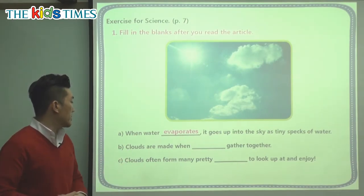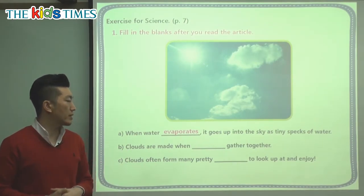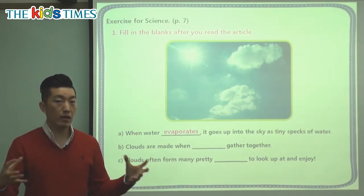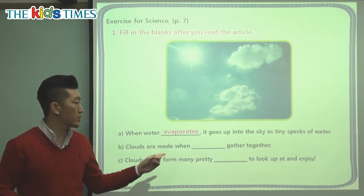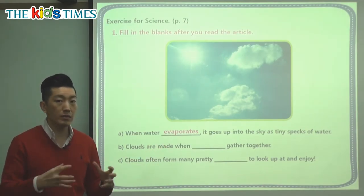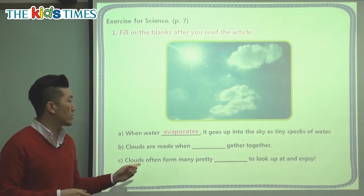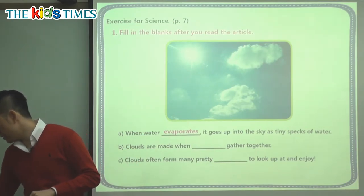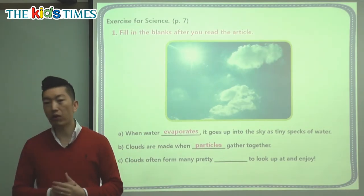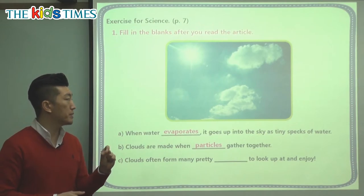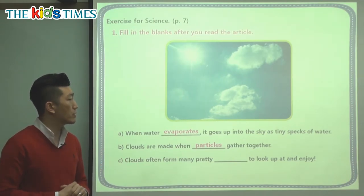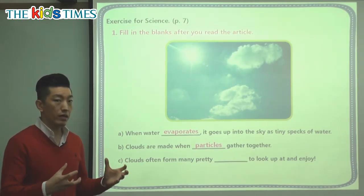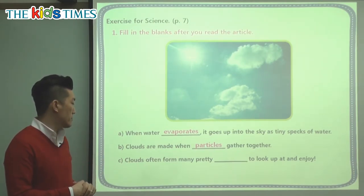Let's look at question B. Clouds are made when something gathers together — so what comes together? Gather means coming together. What comes together to make clouds? They are particles — the very small pieces, very tiny pieces of water. When they come together, that's what makes clouds.